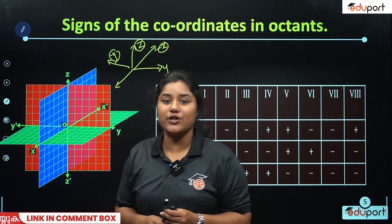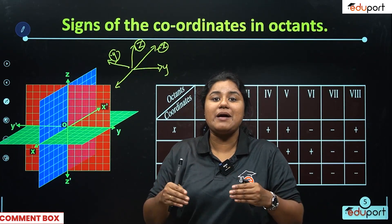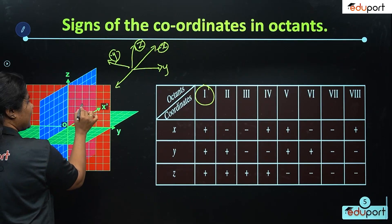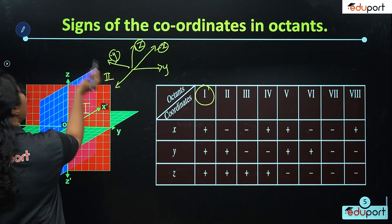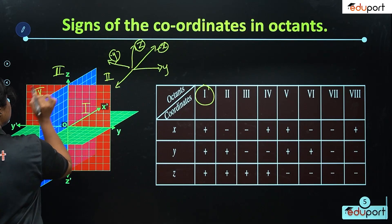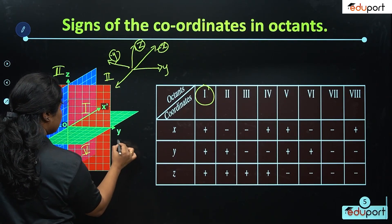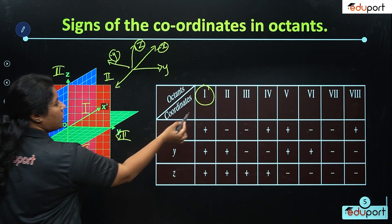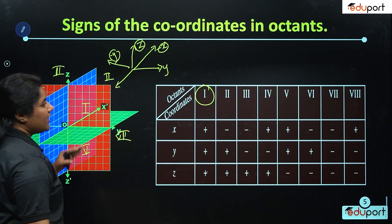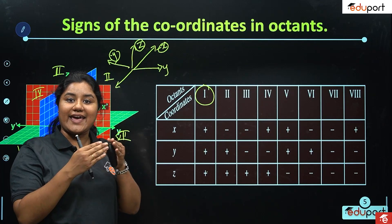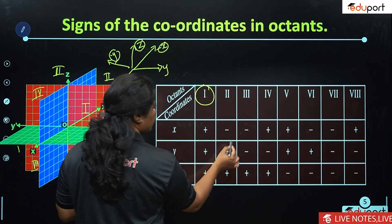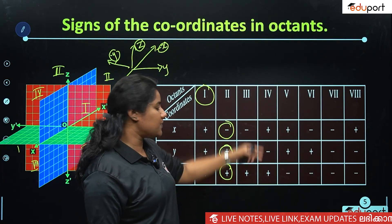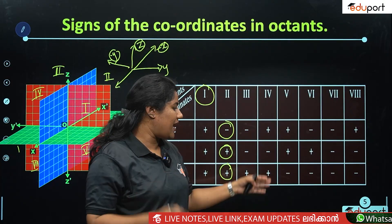In these octants, the x, y, and z axes change sign — negative and positive. In the first octant, x, y, and z are all positive. In the second octant, x is negative, y and z are positive. The third, fourth, fifth, sixth, seventh octants follow different sign combinations for x, y, z accordingly.